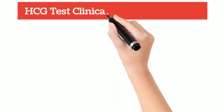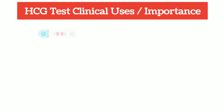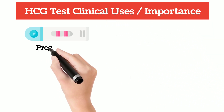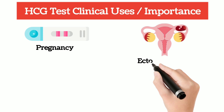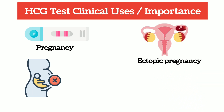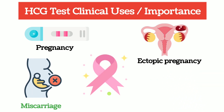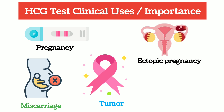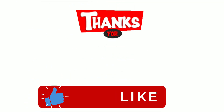Clinically, ECG is used for the early detection of pregnancy, ectopic pregnancy, monitoring the miscarriage, and can diagnose different types of tumors related to females and even males too. Thanks for watching, do subscribe, like, and share the video.